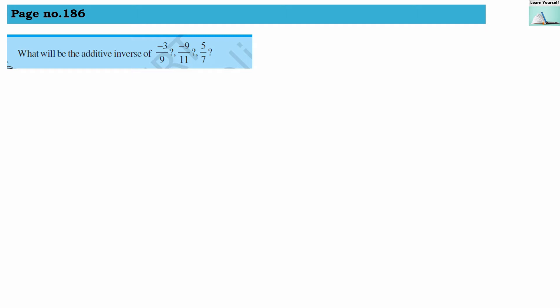Try these sums from page number 186. What will be the additive inverse of minus 3 by 9, minus 9 by 11, and 5 by 7? So the first one is minus 3 by 9.